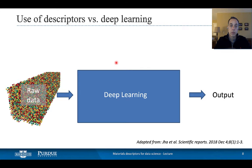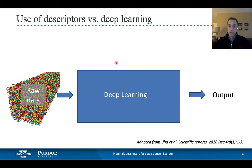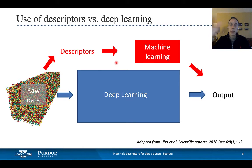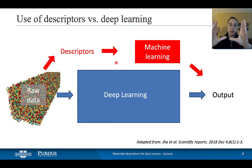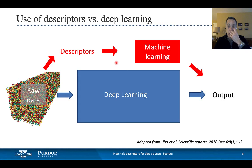To summarize: if I have raw data and an output, deep learning just connects the raw data with the output — but it requires a lot of data. With descriptors, we take a shortcut: from the raw data, we compute descriptors, and from the descriptors we can use simpler machine learning models — not deep learning — to relate to the output. And in the process, we can infuse physics into our workflow.